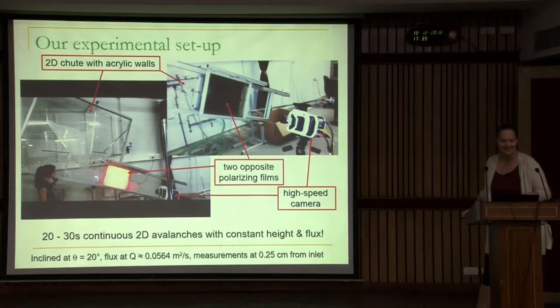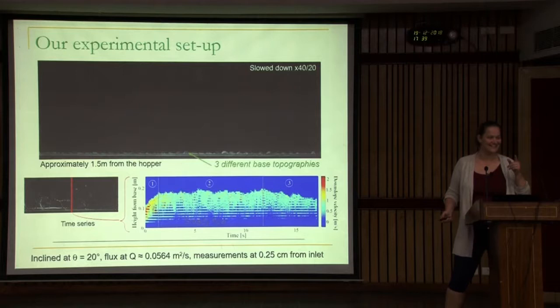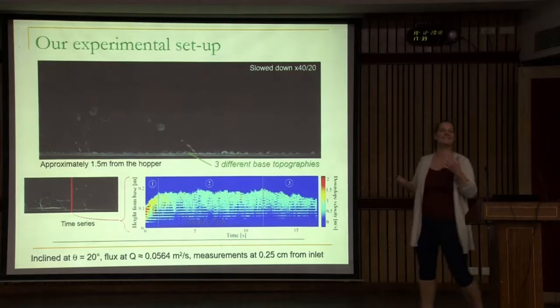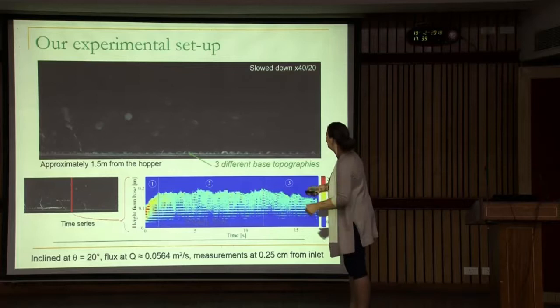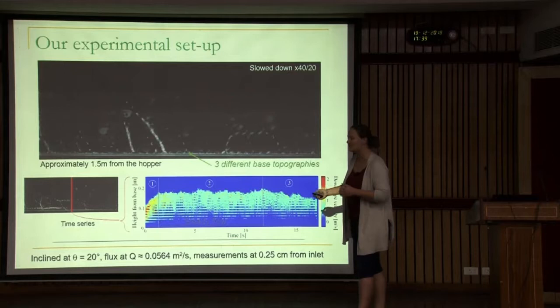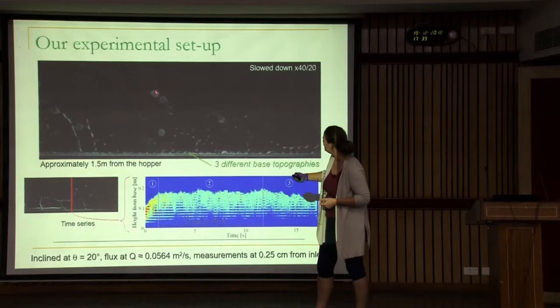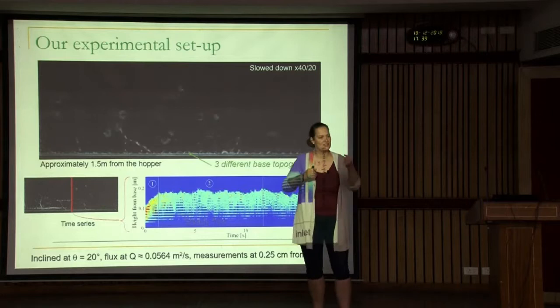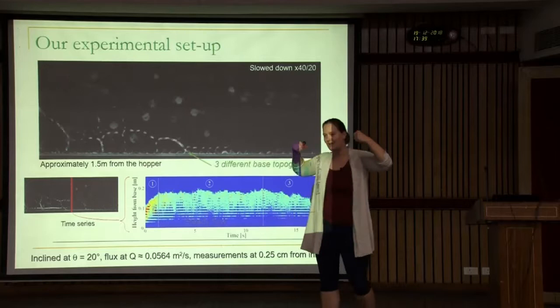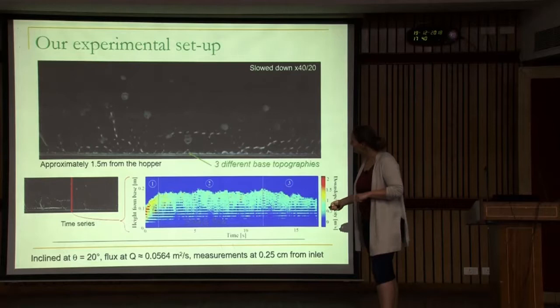Looking at the high-speed imagery — as someone mentioned yesterday, you need a very good camera. There's an avalanche of particles rolling down the slope at 20 degrees. We have a very rough base with particles glued to it to create extra friction. All these lightning flashes are force chains that are temporarily formed and broken again. It's really a process in a fraction of a second — one in one-thousandth of a second — where the force chains are loaded and unloaded again.